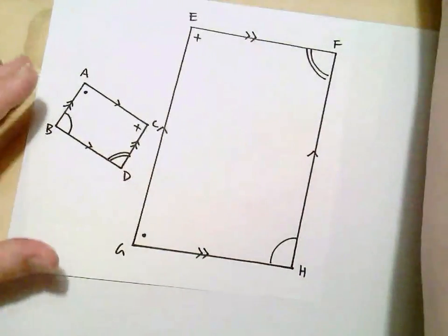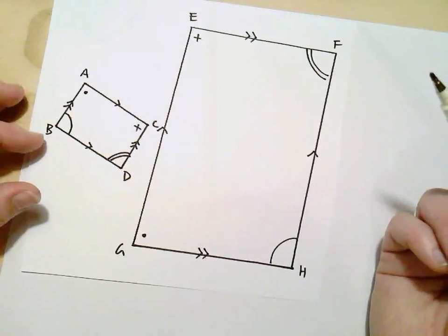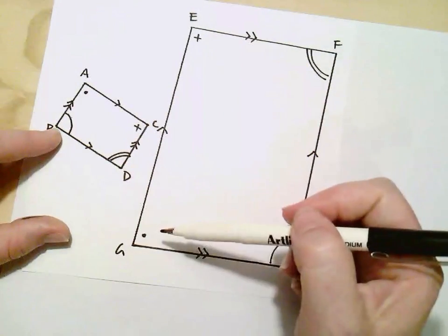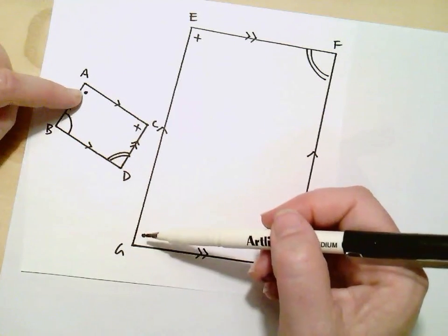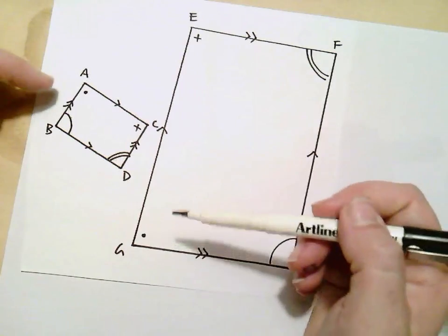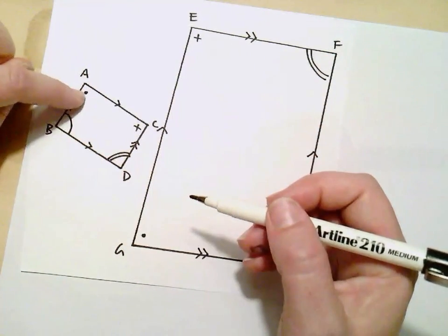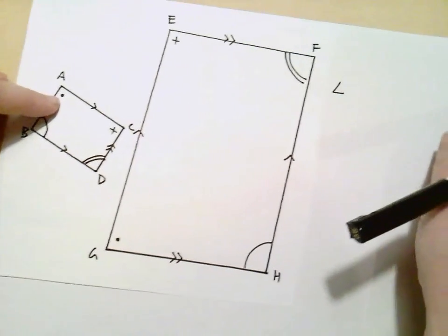So you have a look at the information you're given. In this one we're not given any information about the side lengths. But we are given information about the angle sizes. If two angles are marked with the same symbol, that means those two angles are equal in size. So in this triangle I can see that this angle here marked with this dot. So this would be angle... Can you see that here?